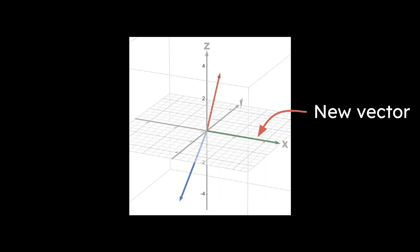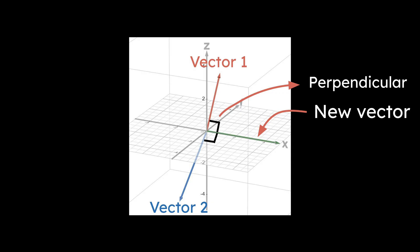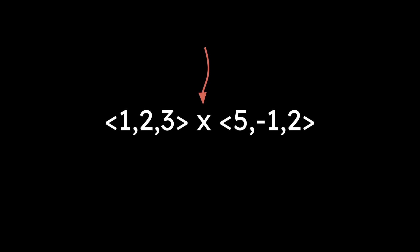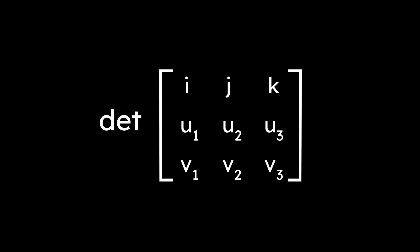The result is a new vector that is perpendicular to both of the original vectors. The cross product is calculated by this formula, or by taking the determinant of this matrix, but we'll get to that.